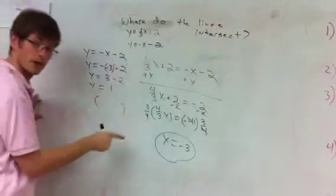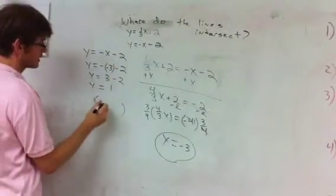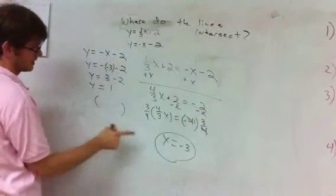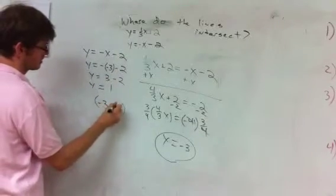So the point of intersection for these two points, or sorry, these two lines, is negative 3, 1.